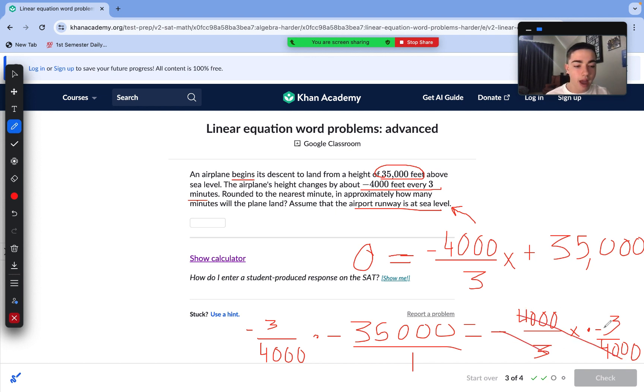So, everything cancels out on our right side. We're just left with x, of course. Our negative signs cancel out on our left side. So, let's go ahead and do this multiplication. 3 times 35,000 is just 35 times 3. And we add three zeros to the product. So, 5 times 3 is 15. We are left with 105,000.